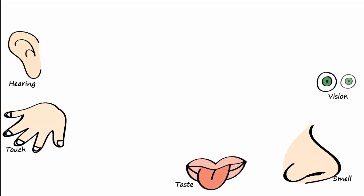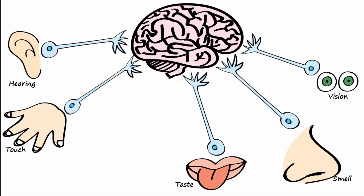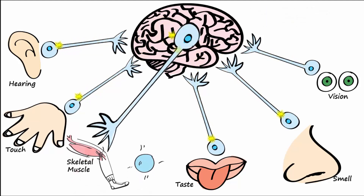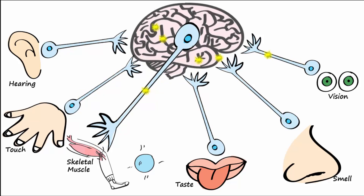Think of your senses. Sensory receptors located throughout your body will transduce different forms of energy — like light waves, sound waves, or mechanical energy from touch — into electricity that can be transmitted by neurons to the brain. An electrical signal sent toward the central nervous system is known as an afferent signal. The brain receives afferent electrical signals and interprets them as important information about our internal and external environment. The brain also sends electrical signals out to control muscles and glands.